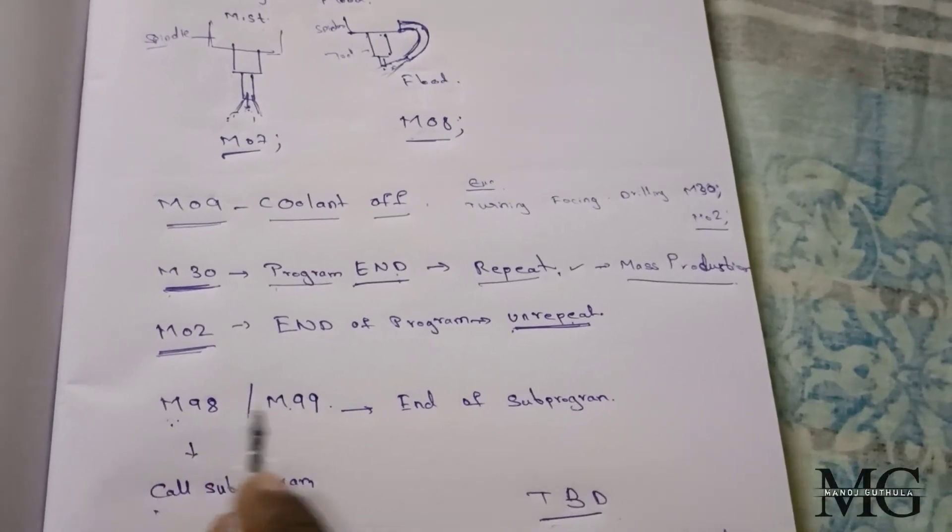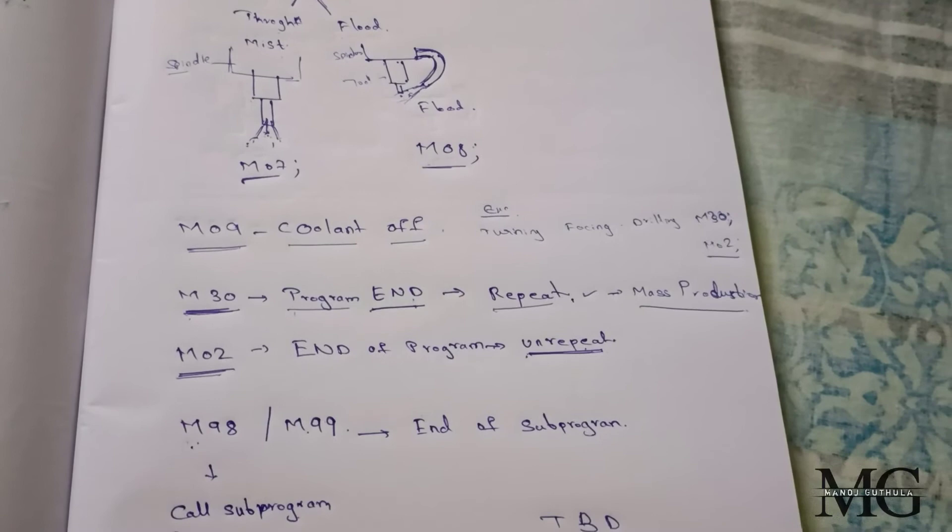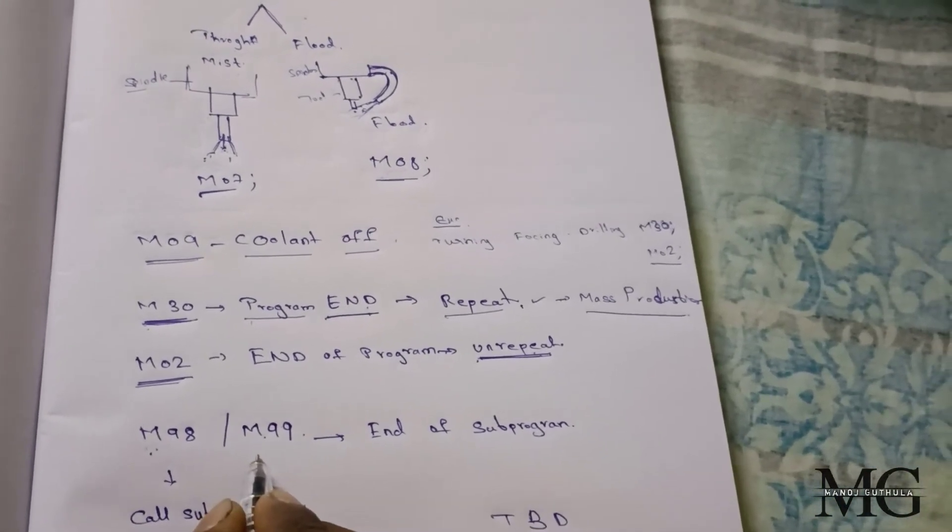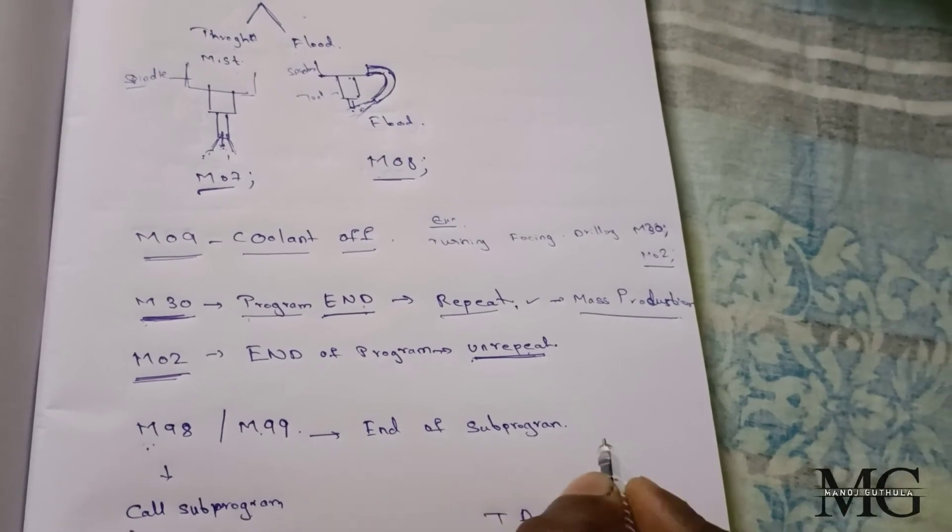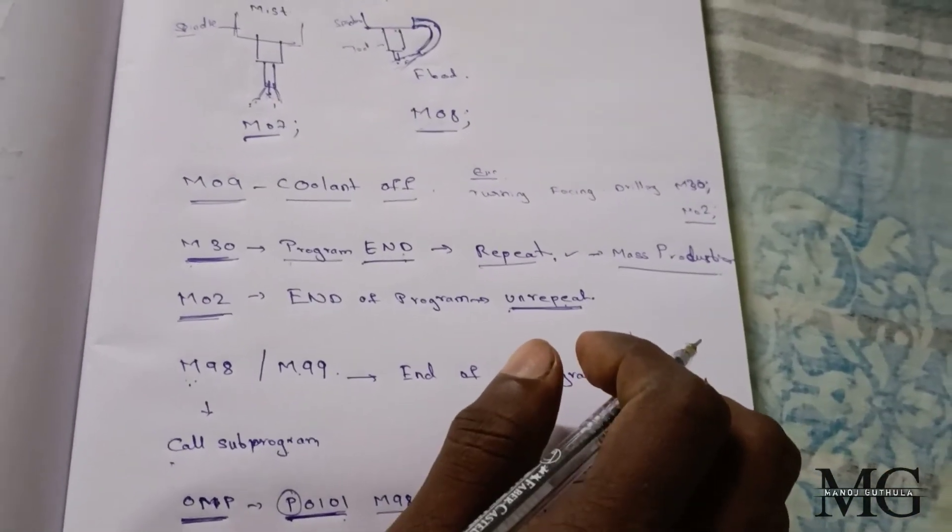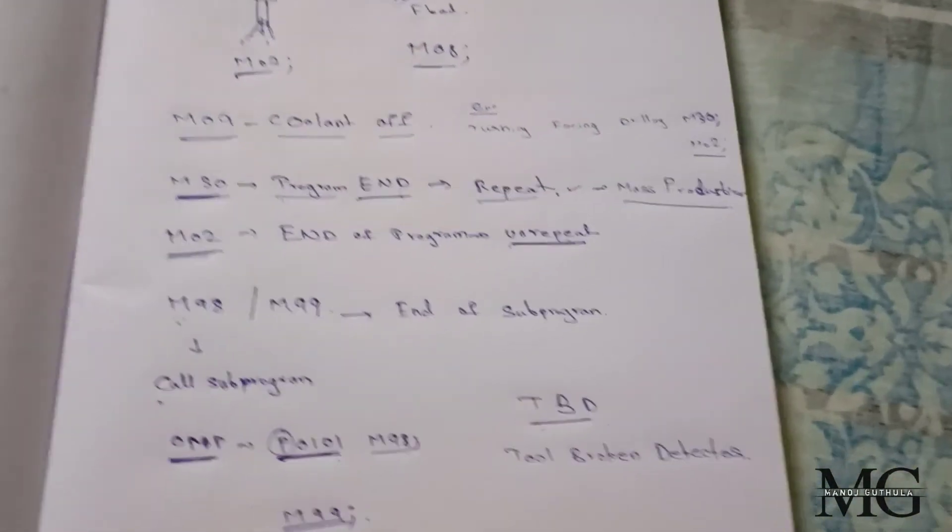And later, M98 and M99. M98 refers to call of sub-program, and M99 refers to end of sub-program. What is sub-program? Why we use sub-program? Sub-program is from the main program.